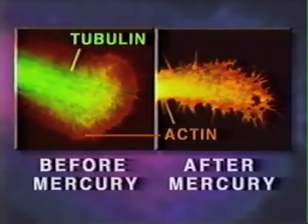Shown here is a neurite growth cone stained specifically for tubulin and actin before and after mercury exposure. Note that the mercury has caused disintegration of tubulin microtubule structure.